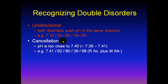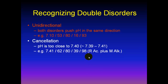Cancellation is another way we recognize double disorders. The rule of thumb is if the pH is very close to 7.40 and there are acid-base disorders, there are likely to be more than one — at least two. For example, this blood gas has a nearly normal pH, too close to 7.4 for any standard compensation. We see a high pCO2 — a respiratory acidosis — and a high bicarb — a metabolic alkalosis. They're both primary, since either one is too high to be pure compensation for the other. So this is a double disorder: respiratory acidosis and metabolic alkalosis, both primary.